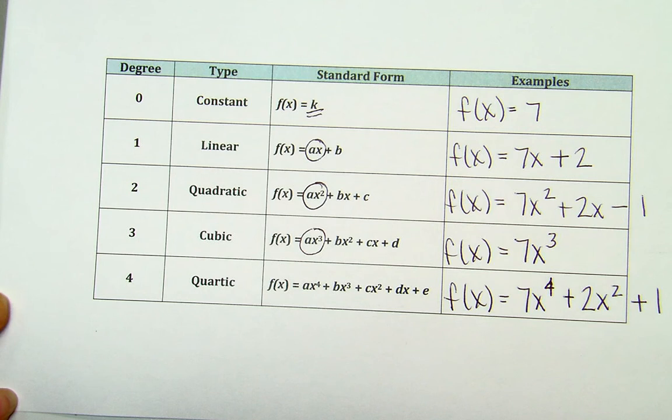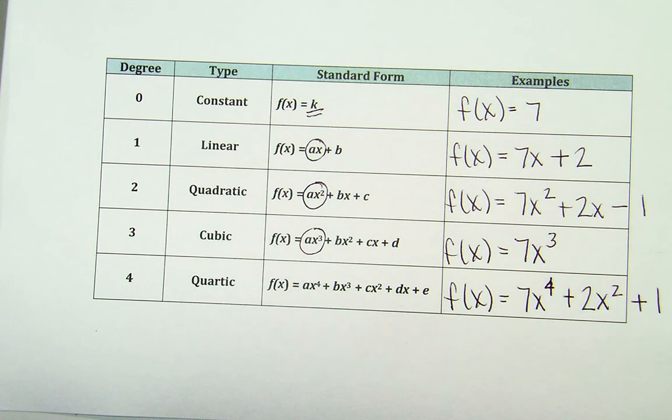And lastly, degree 4 is called a quartic function. And there's an example of 7x⁴ + 2x² + 1, which is an example of a quartic function. So that was just an overview of what we talked about the last time when we introduced polynomials in class.